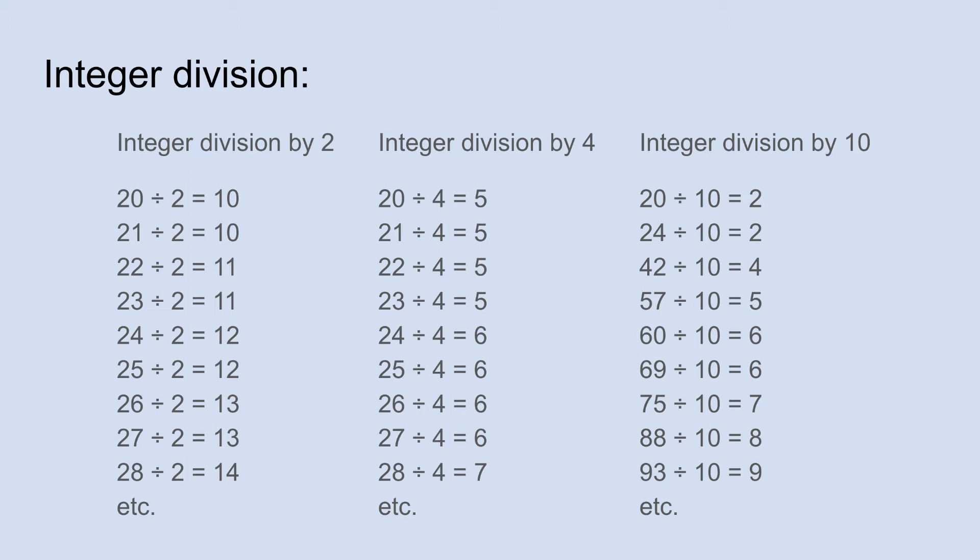So 20 divided by 2, for instance, is obviously just 10. But so is 21 divided by 2. Even though you might think 21 divided by 2 is 10 remainder 1, all we're interested in is the quotient, so we just ignore the remainder 1. You can see 22 divided by 2 is 11, but so is 23 divided by 2, etc.